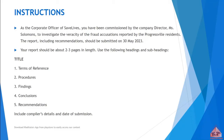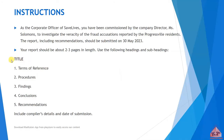Use the following headings and subheadings. The first thing you should include in your report is the title, which will be followed by the terms of reference, then procedures, then findings, then conclusions, then recommendations, and lastly, the compiler's details and date of submission. You will notice that the title is not numbered, but the terms of reference all the way to the recommendations are actually numbered. That is exactly what you are supposed to do in this report.